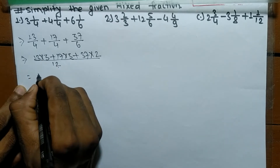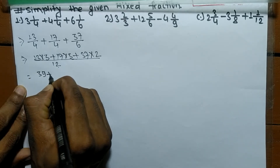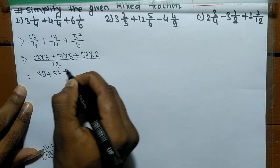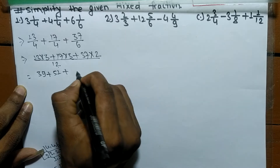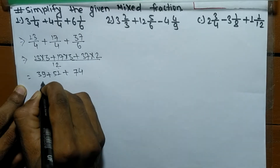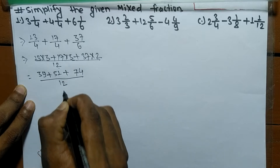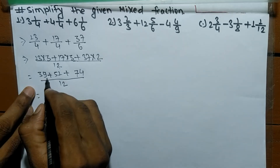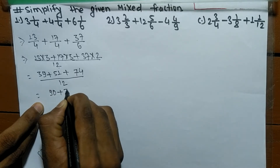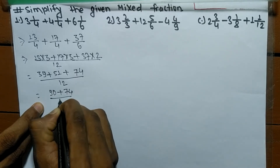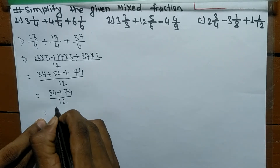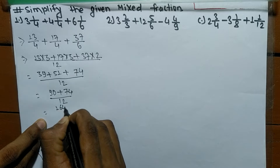So now 13 times 3 means 39, plus 17 times 3 means 51, plus 37 times 2 means 74, all by 12.